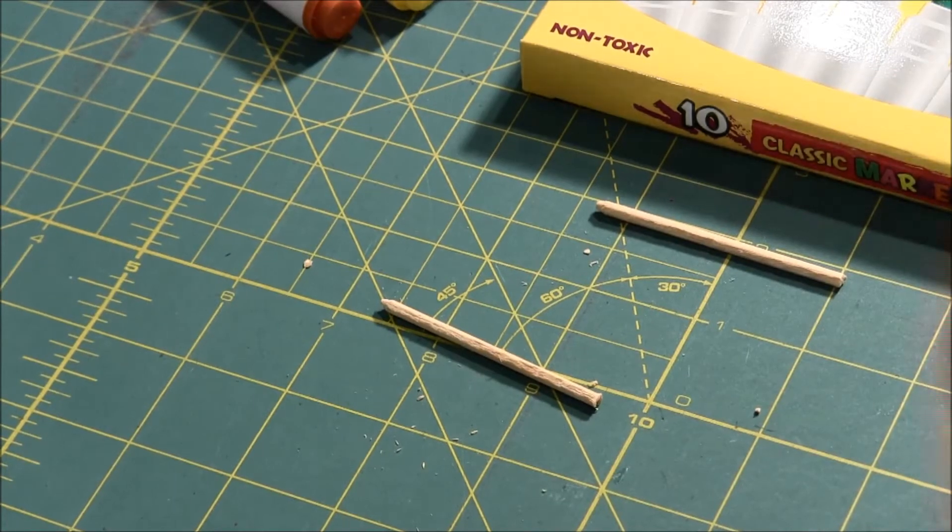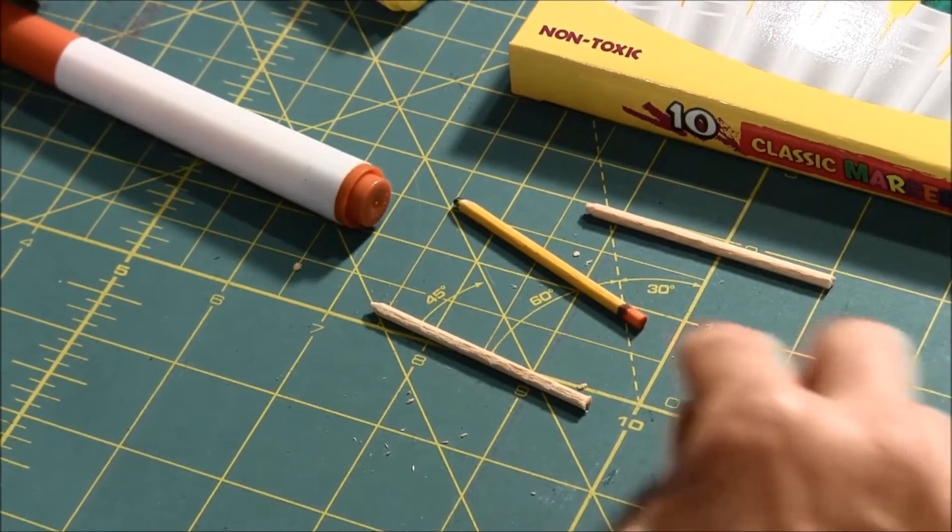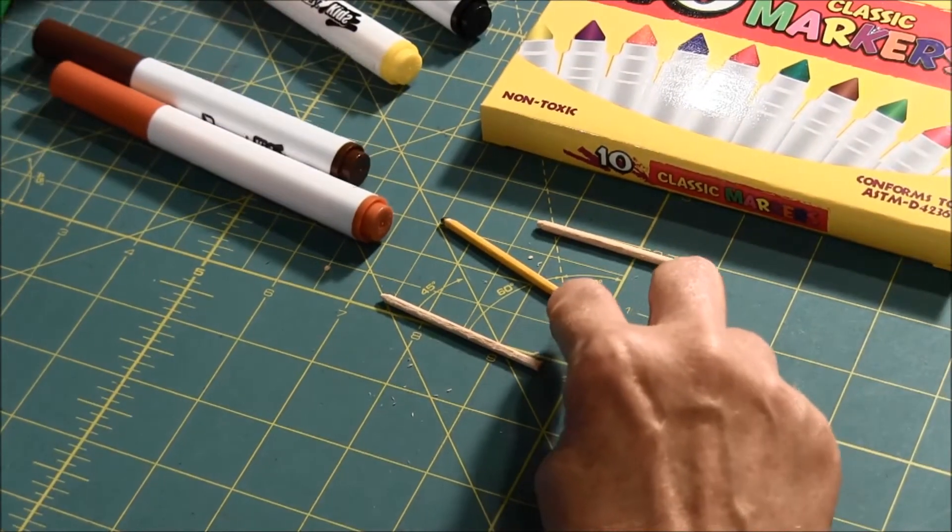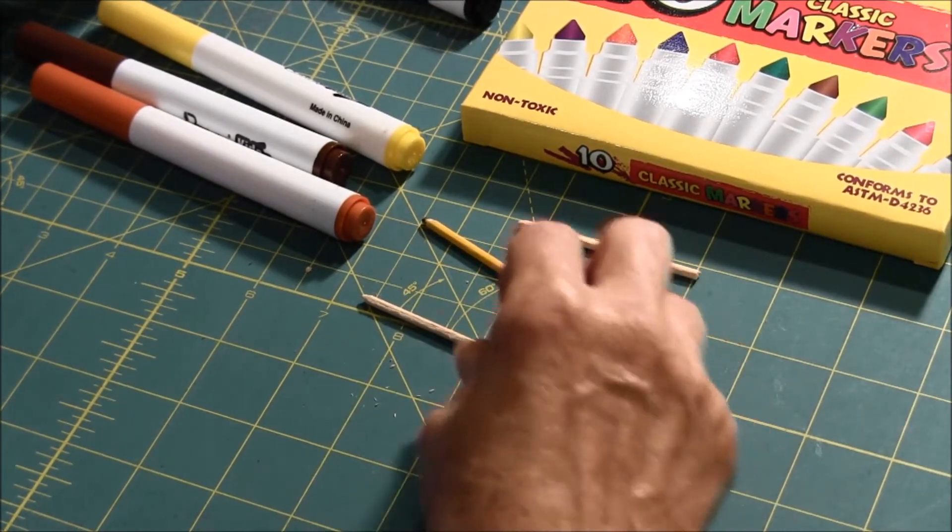Now for the pencil, what I used was orange for the eraser, brown for the little metal part, yellow for the pencil part, and black for the tip.